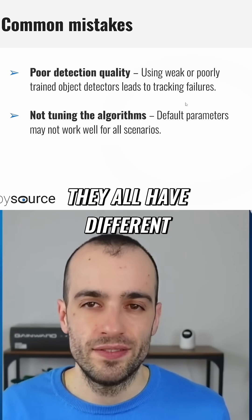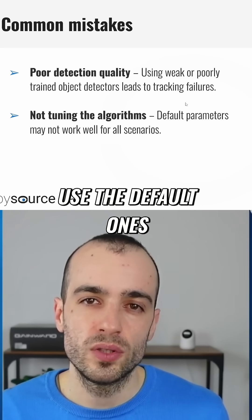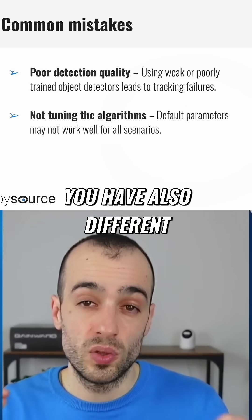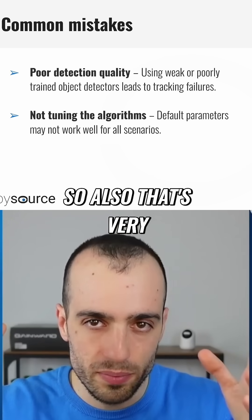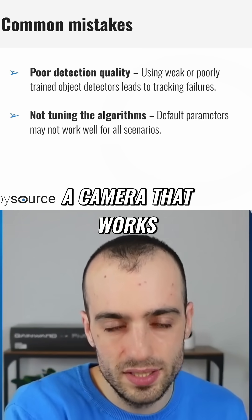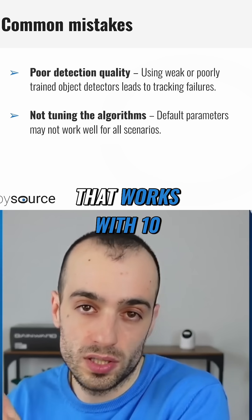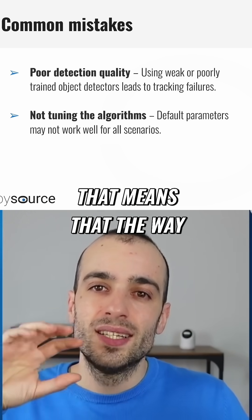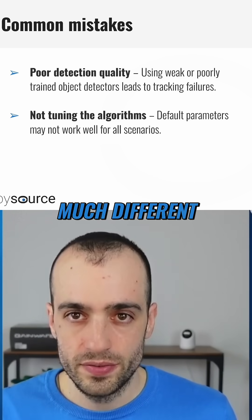The second pitfall is not tuning the algorithms. The algorithms I showed you all have different parameters, and using the defaults may not work well because each scenario is different. Frames per second also matters a lot — if you have a camera running at 30 FPS versus one running at 10 FPS, the way tracking reacts is much different.